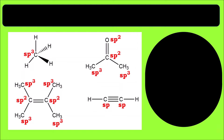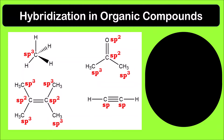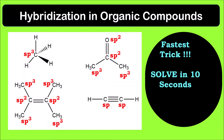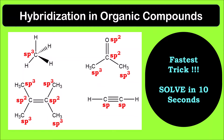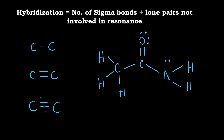Hello everyone, welcome to Chemazon Complete Chemistry. In today's video we are going to see how we can find out the hybridization of atoms in organic compounds using a very simple trick. The formula is: hybridization = number of sigma bonds plus lone pairs that are not involved in resonance.